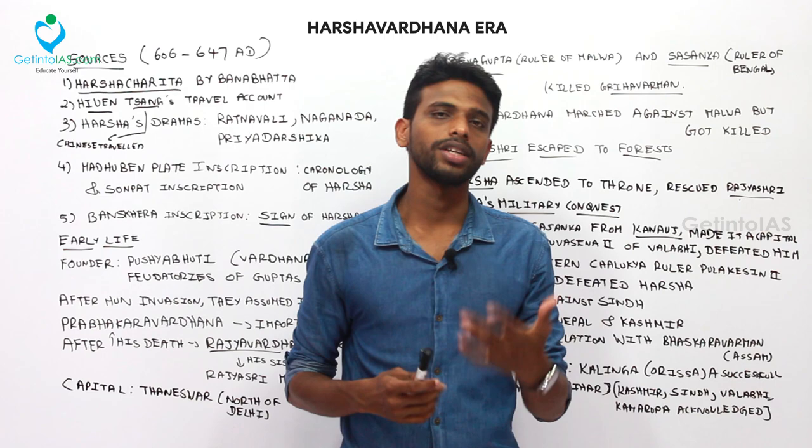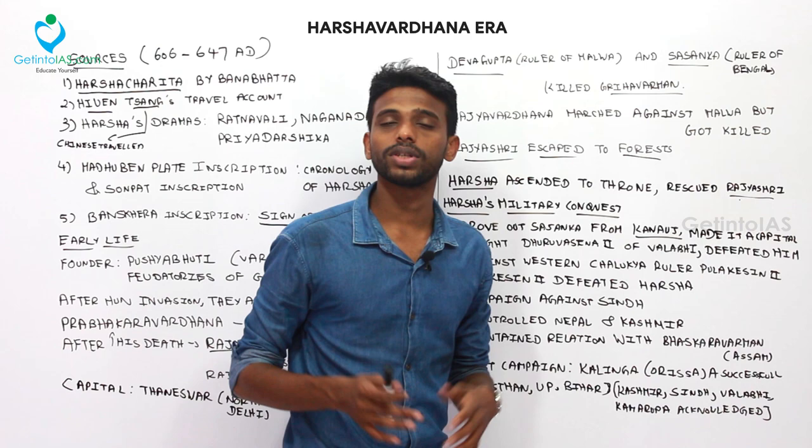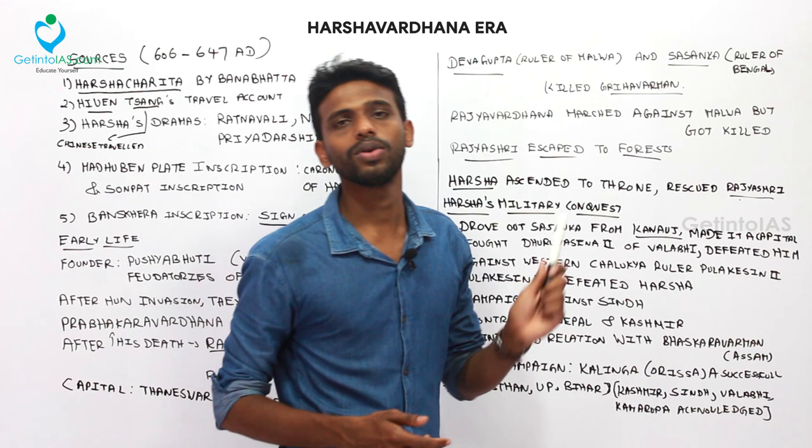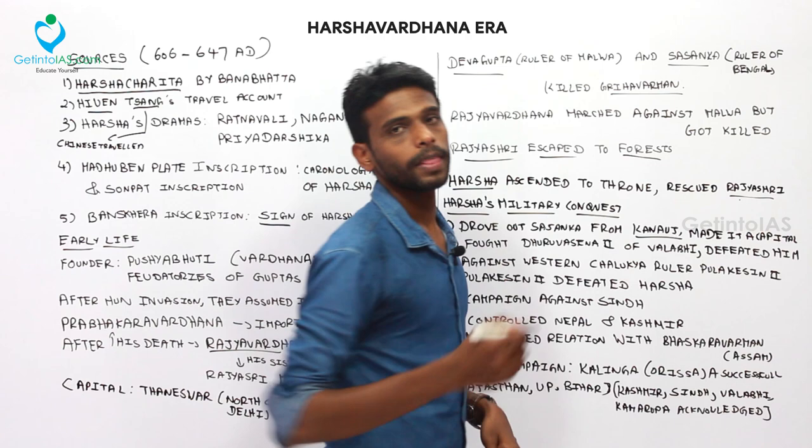Moving on to Harsha's military conquests — his brother-in-law had been killed by Devagupta and Shashanka. His first military conquest was against the ruler of Bengal. He drove out Shashanka from Kanauj, which was the capital, and made Kanauj his own capital. Harsha Vardhana's political empire began at this time and he became a well-known ruler.